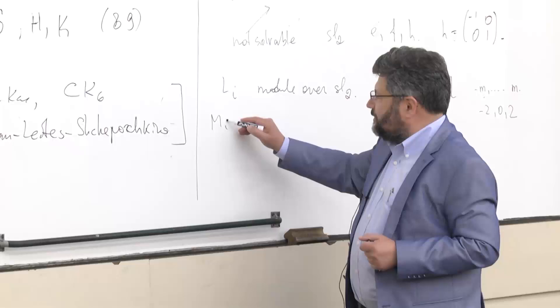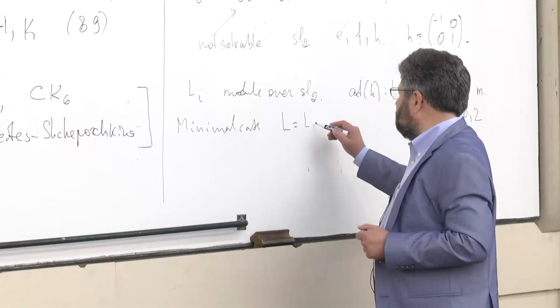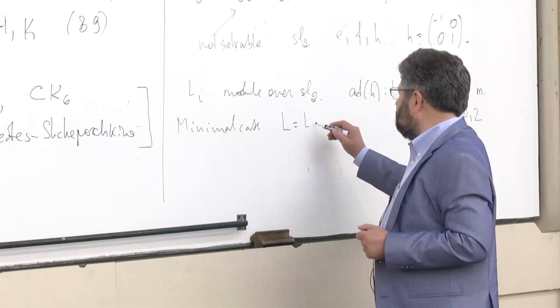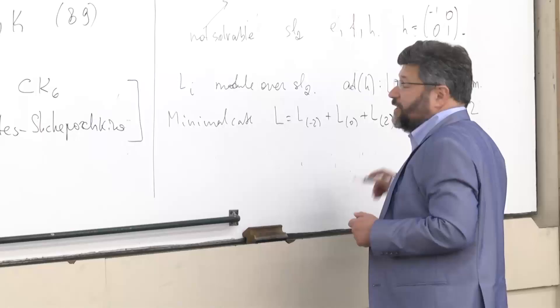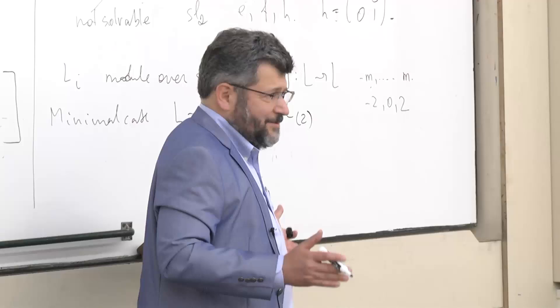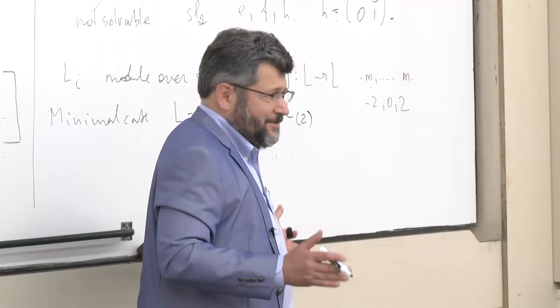The minimal unavoidable eigenvalues are -2, 0, and 2 because they occur already in sl2. In the minimal case, L becomes a direct sum of three eigenspaces. This is complex because L has three gradations: it is a superalgebra, Z-graded, and now a direct sum of three eigenspaces.